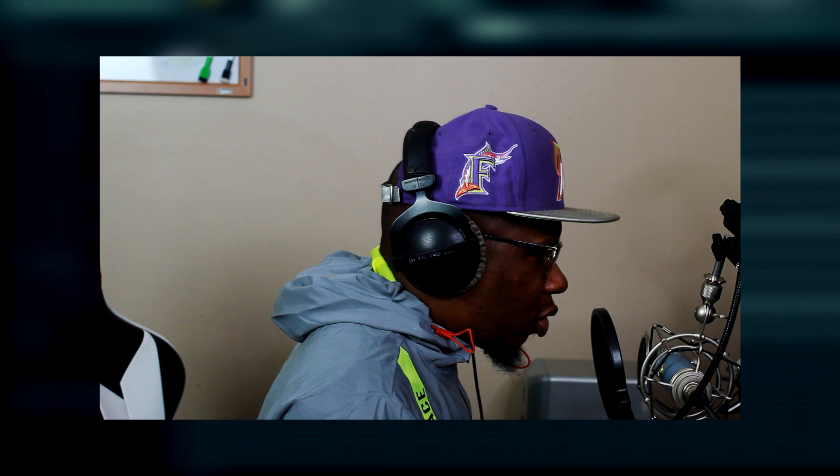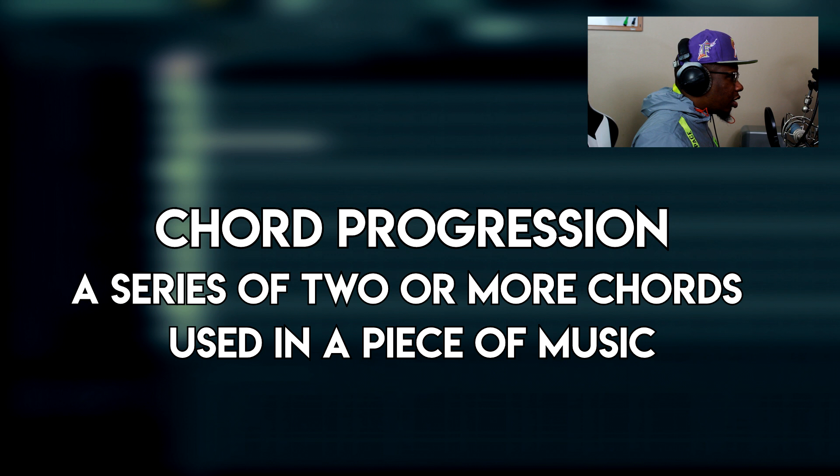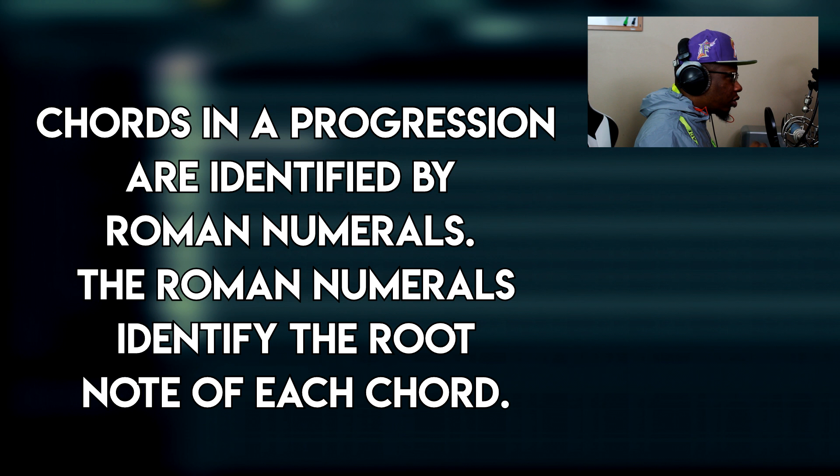Let's talk about chord progressions, how they work, and everything. First off, a chord progression is a series of chords in a song. They are usually defined by Roman numeral numbers, and those Roman numeral numbers determine what the root notes of the chords that are used are. Let's break that down and look at what that actually means.